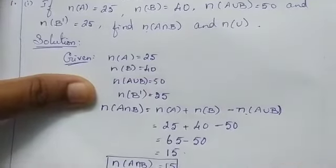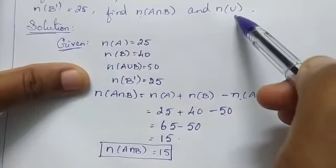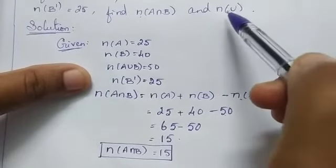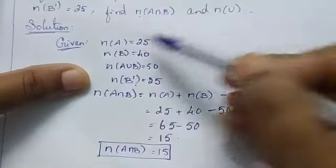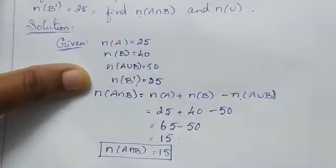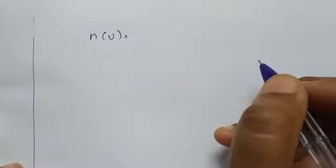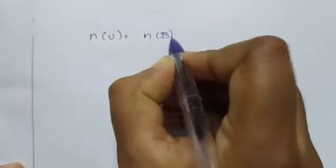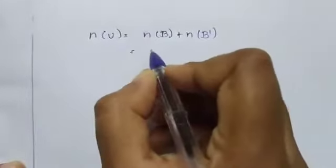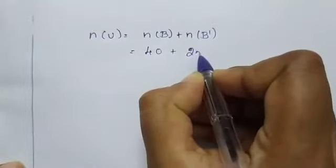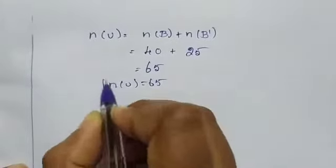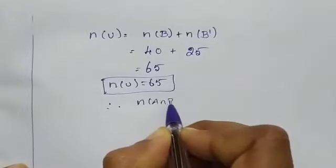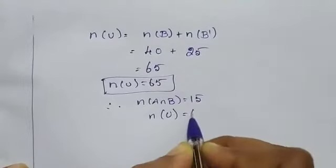Second, find N of A union B equals 60 — actually, find N of U. N of U equals N of B plus N of B dash. Here, B and B dash are given. N of B is 40, N of B dash is 25. Therefore, 40 plus 25 equals 65. N of U is equal to 65.